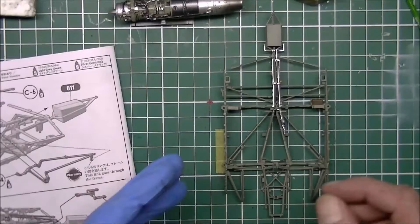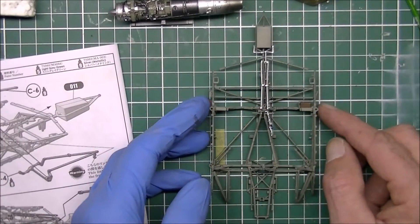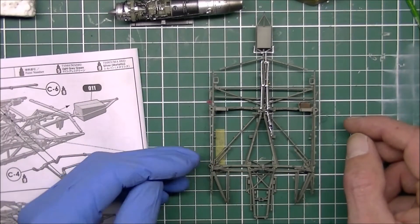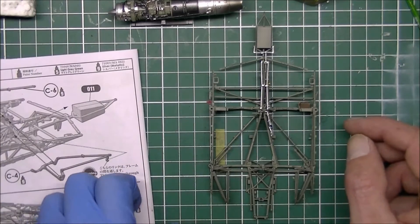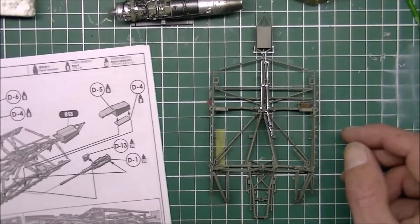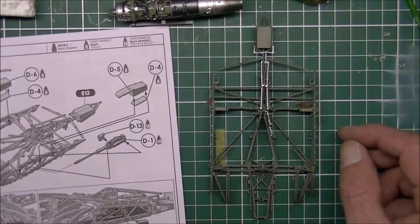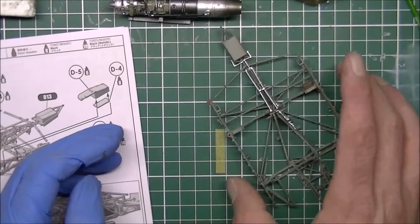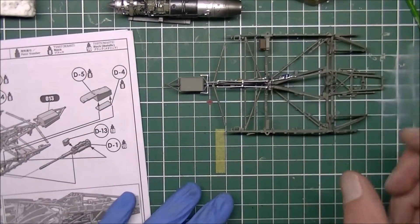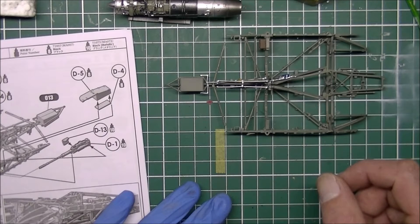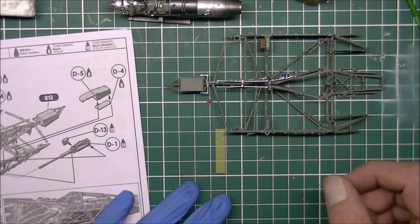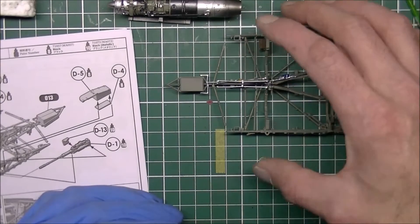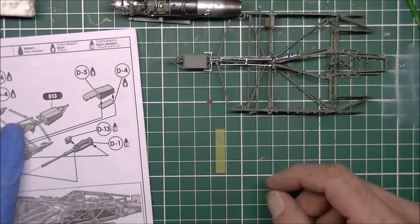This needs to dry because I've been gluing a lot and then I can continue with the machine gun assembly. I don't really care for weaponry on aircraft but in this case it should go in there.